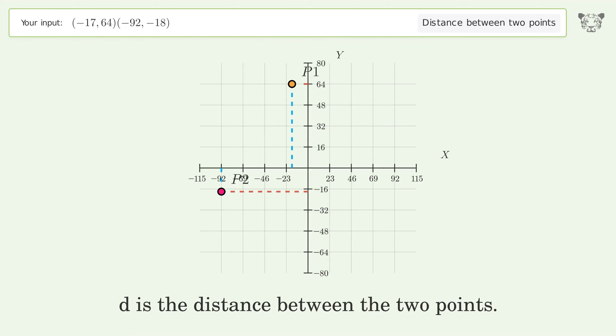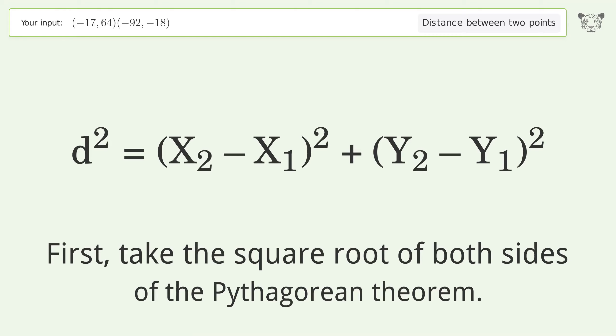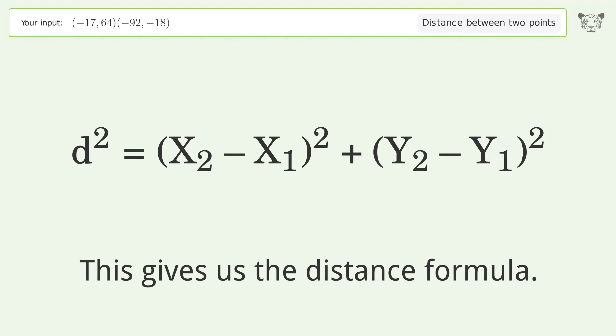d is the distance between the two points. First, take the square root of both sides of the Pythagorean theorem. This gives us the distance formula.